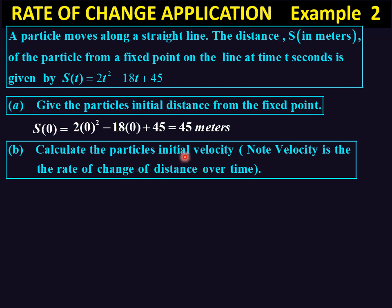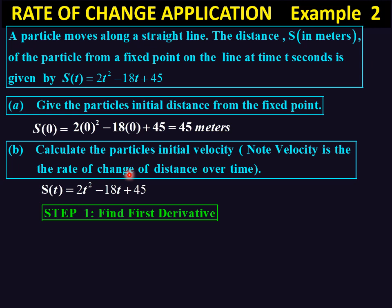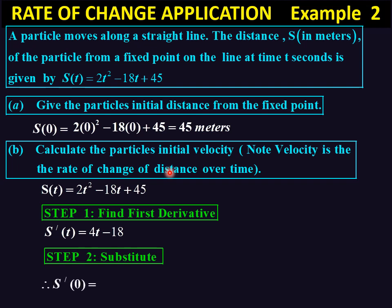Next, calculate the particle's initial velocity. Velocity is the rate of change of distance with respect to time. Initial means when time is zero. So we differentiate s(t), giving 4t minus 18. Then substitute t equal to 0: we get 4 times 0 subtract 18, which gives negative 18 meters per second. If asked to interpret this, the velocity is decreasing.